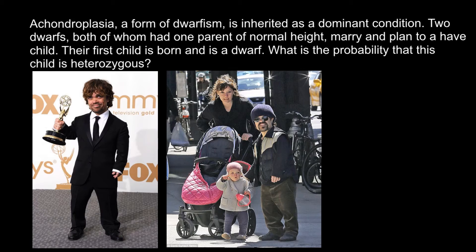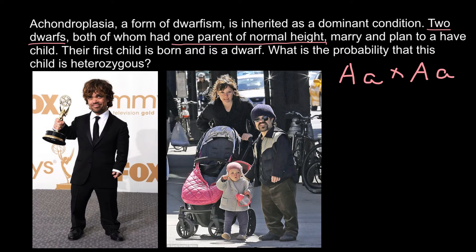Once again, this form of dwarfism is caused by a dominant allele. Returning to our problem: we know that two dwarves, both of whom had one parent of normal height. This tells us that both of them must be heterozygous — each received one dominant allele causing the genetic disorder from one parent and a normal recessive allele from the other parent of normal height. These are the genotypes of the parents.